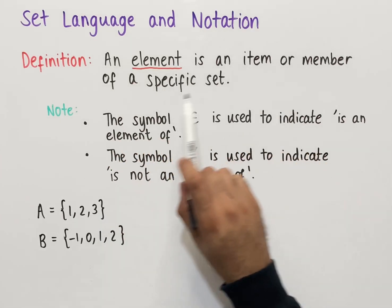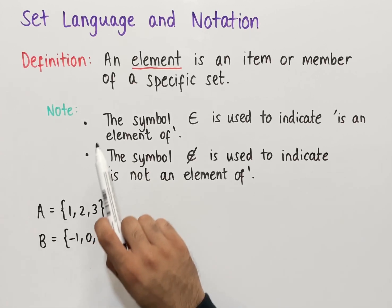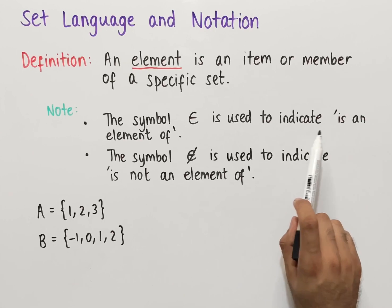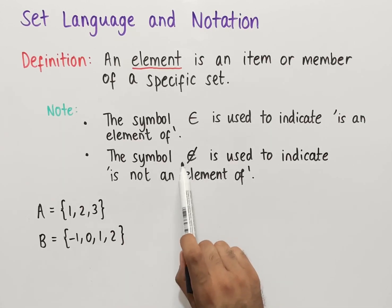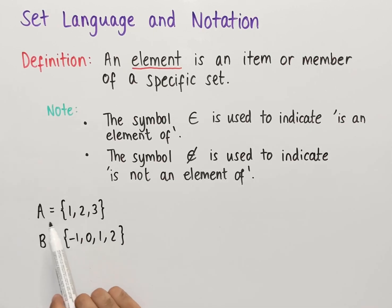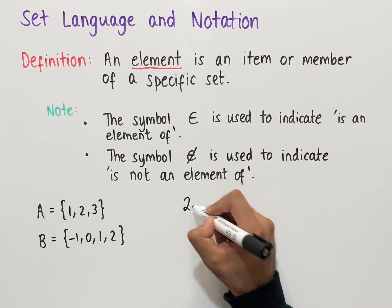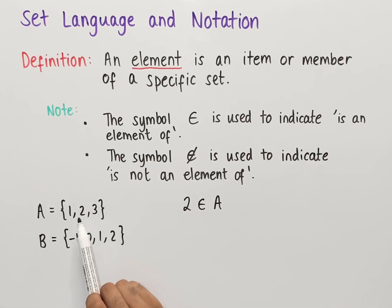An element is an item or member of a specific set. The key notation is that we use the lowercase Greek letter epsilon to indicate 'is an element of,' and the epsilon with a line through it to indicate 'is not an element of.' We have set A which is the numbers one, two, and three, and set B which is the numbers minus one, zero, one, and two. We can say that the number two is an element of set A since two is within this set.